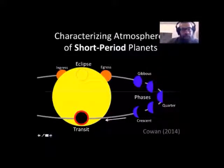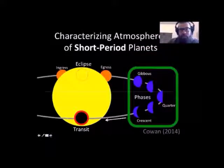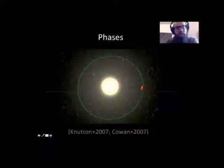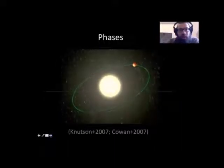That was it for the eclipses—that was all just characterizing the day sides of planets. Now I'm going to move on to phase curves. This is going to be observations of planets throughout their orbit, so this means we're going to be learning about not just the day sides but also their night sides.